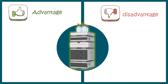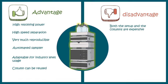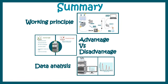HPLC has several advantages: it offers very high resolving power because of the high pressure and very small particle size of the beads, which increase surface area and enhance separation. The speed of separation is unprecedented and very reproducible. It can be used in laboratory or industrial settings, and the automated sampler makes it easy to use for high-throughput work. A disadvantage is that the initial HPLC setup can be expensive, though it is highly efficient.